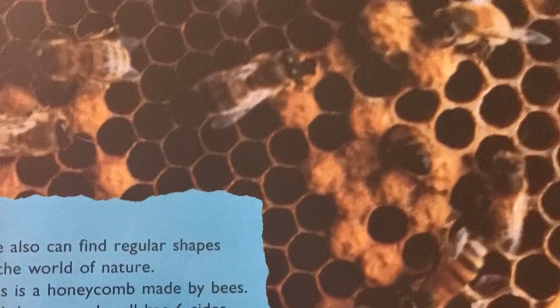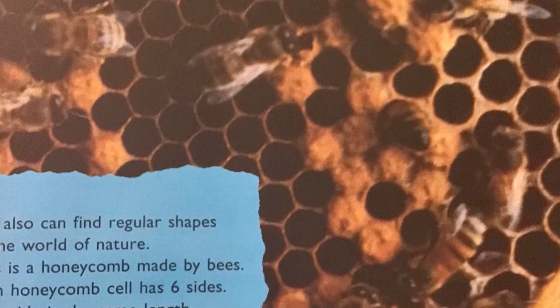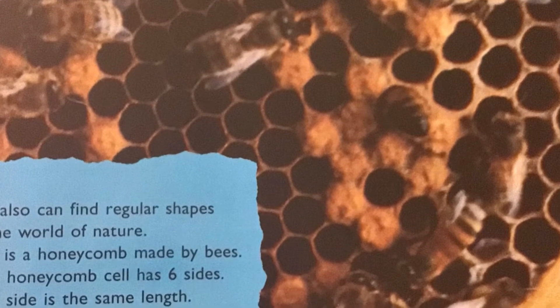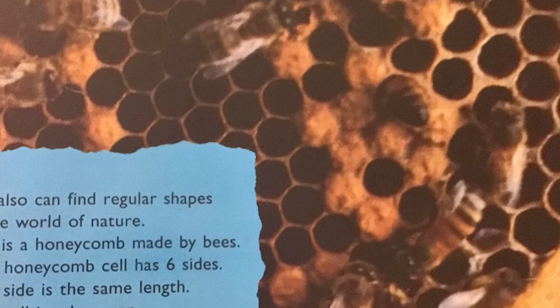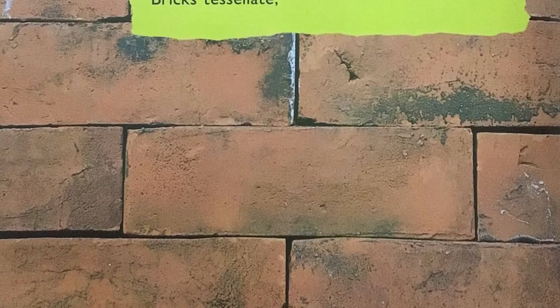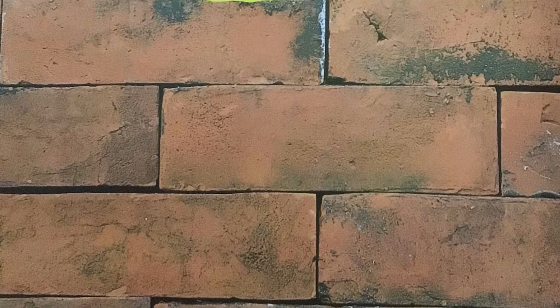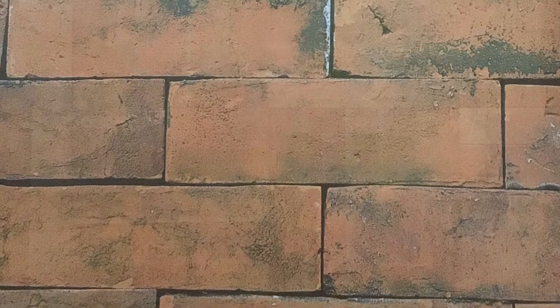We can also find regular shapes in the world of nature. This is a honeycomb made by bees. Each honeycomb cell has six sides, each side the same length — each cell is a hexagon. Tessellation is a word used to describe shapes that fit together without leaving gaps. Bricks tessellate. That is a big word, and it means the shapes fit together without gaps. Blocks also tessellate — they fit together without leaving gaps.